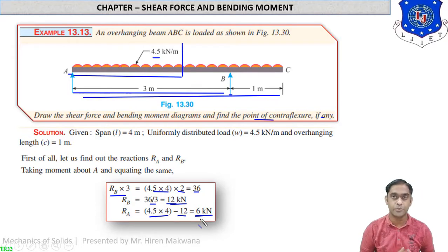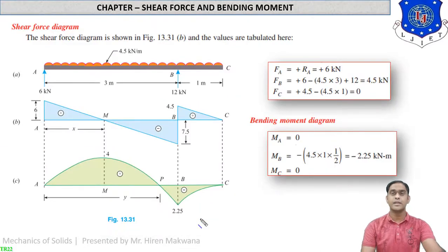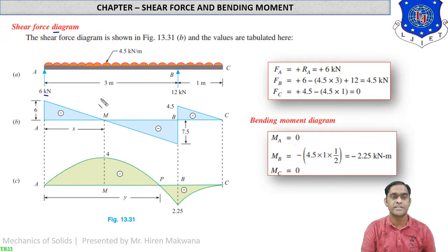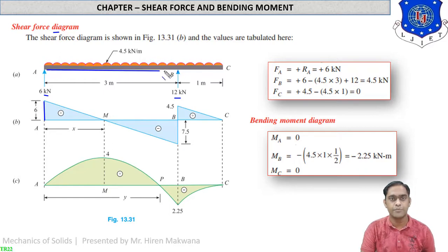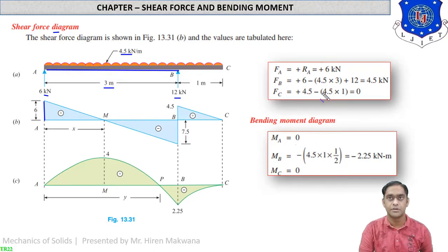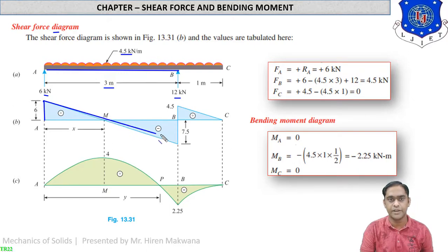Now let us move ahead and check the shear force and bending moment diagrams for the same beam. At point A, the 6 kN support reaction acts upward, so draw the 6 kN line upwards. From A to B there is a UDL of 4.5 kN/m over 3 meters, so 4.5 × 3 = 13.5. Subtracting 13.5 from 6 gives minus 7.5 at point B. So the shear force drops from +6 to -7.5 between A and B.